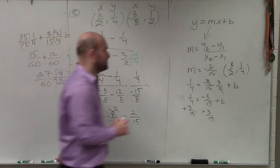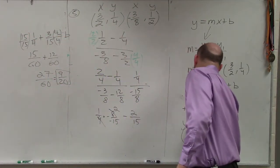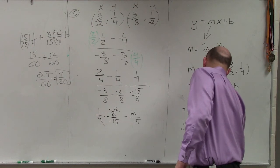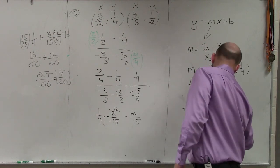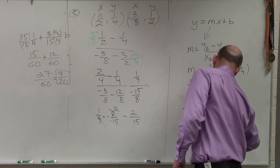And I have my slope. So my final equation is y equals negative 2 fifteenths x plus 9 twentieths.